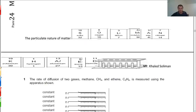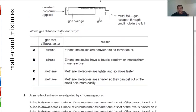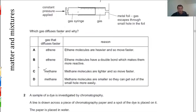The last MCQ involves two chemical compounds: methane and ethane. Methane is lighter. Because it is lighter, methane diffuses faster. The question asks which gas diffuses faster — the answer is methane, because it has lower molecular mass. The size of the particle does not significantly affect diffusion — it is the molecular mass that matters.